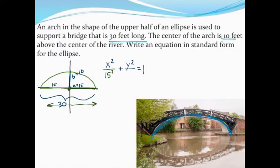The b value, which is like the short radius in the vertical direction, will go under the y. So b squared, or 10 squared, goes under the y squared value.